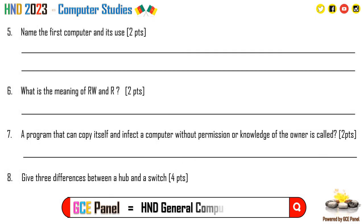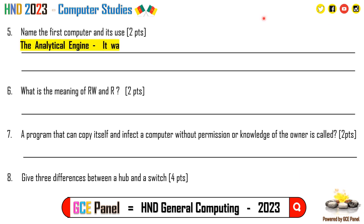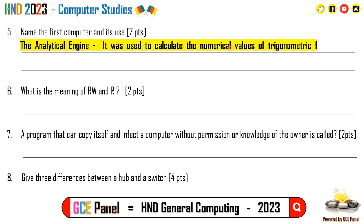Section B, Question 5: Name the first computer and its use. The first computer was the analytical engine, and it was used to calculate or compute numerical values of trigonometric functions or formulae.